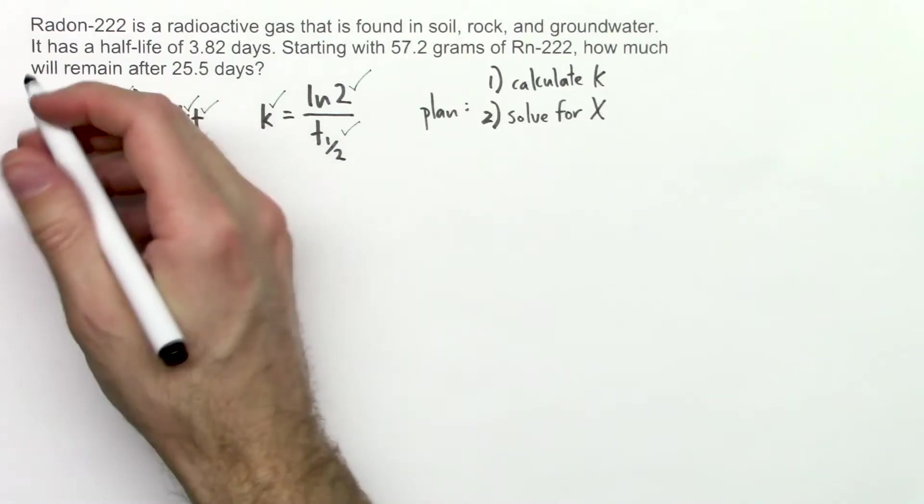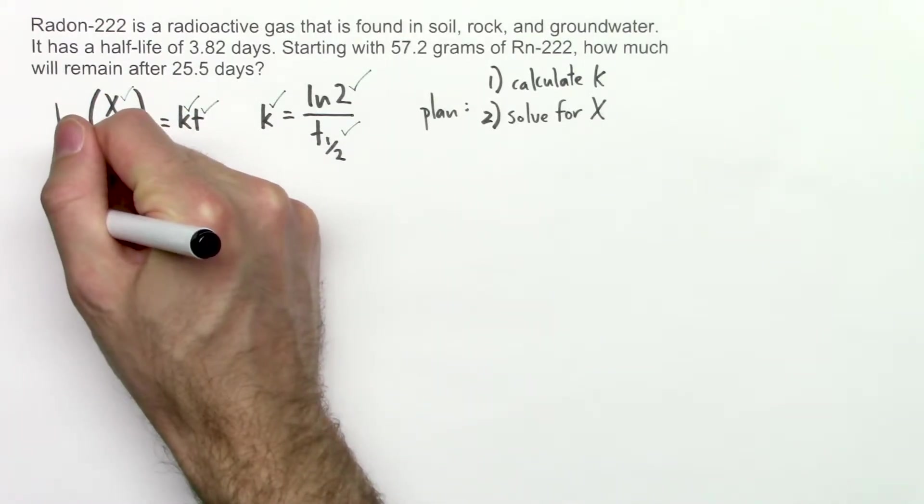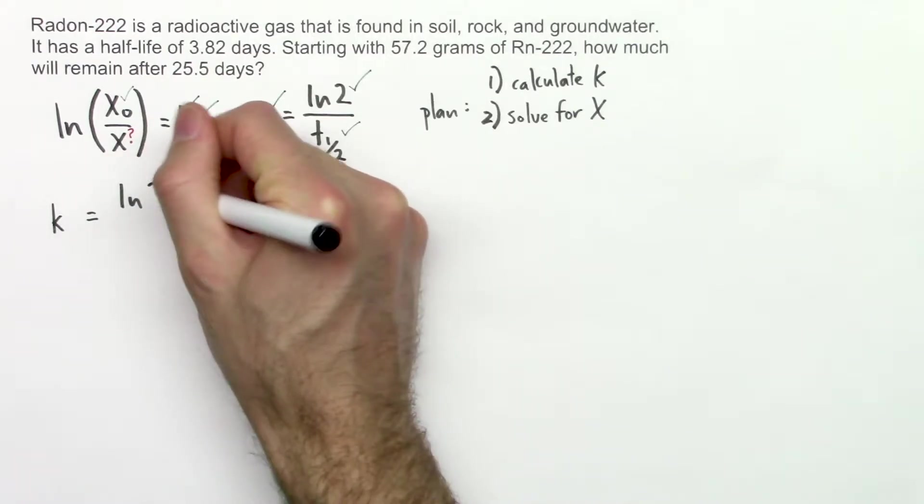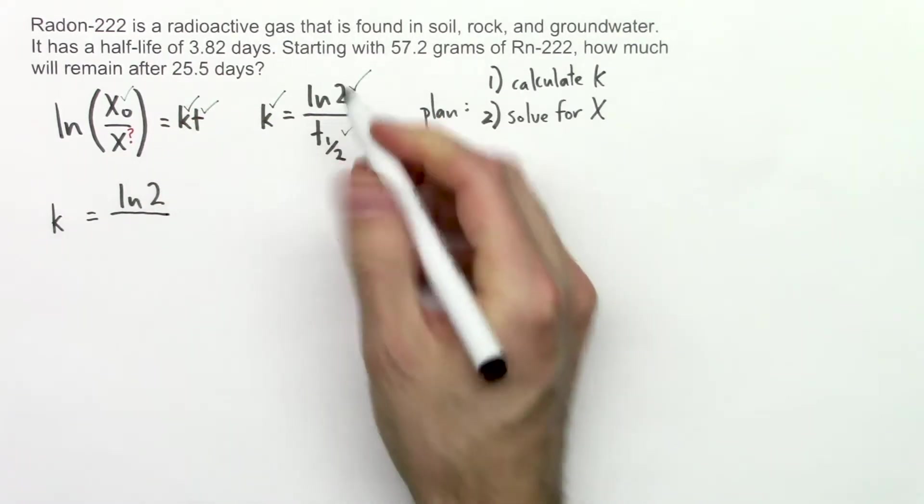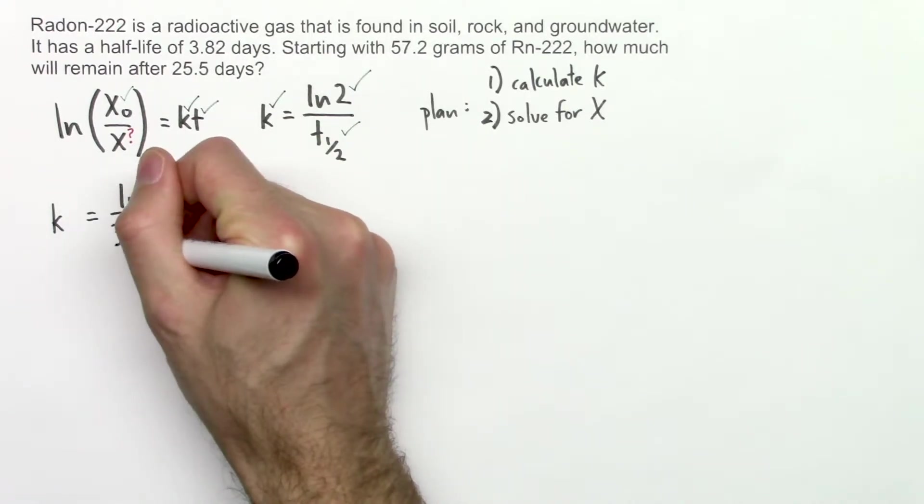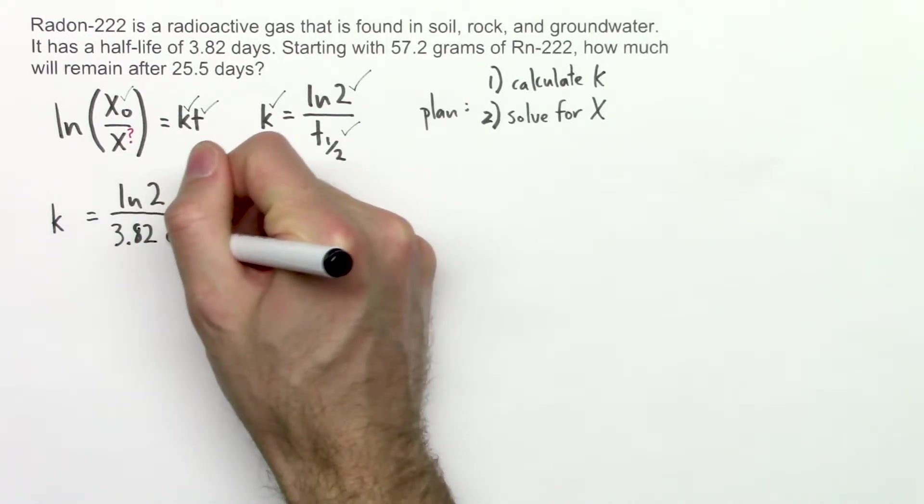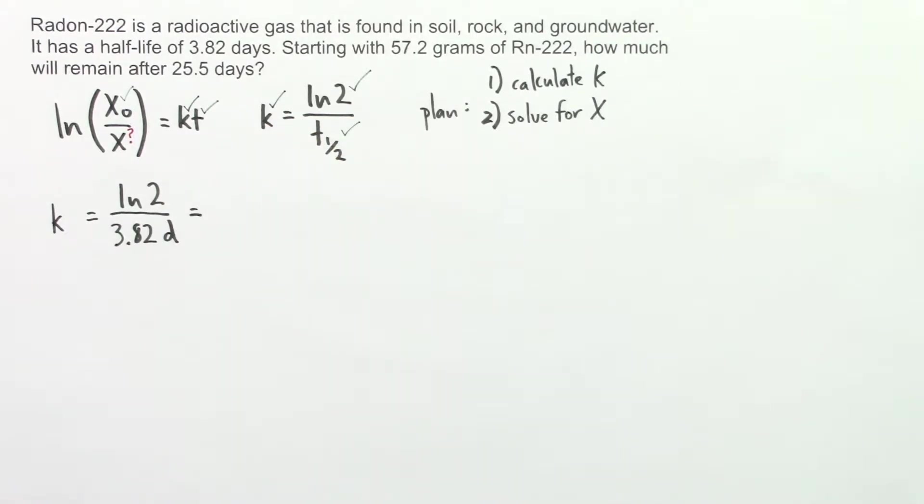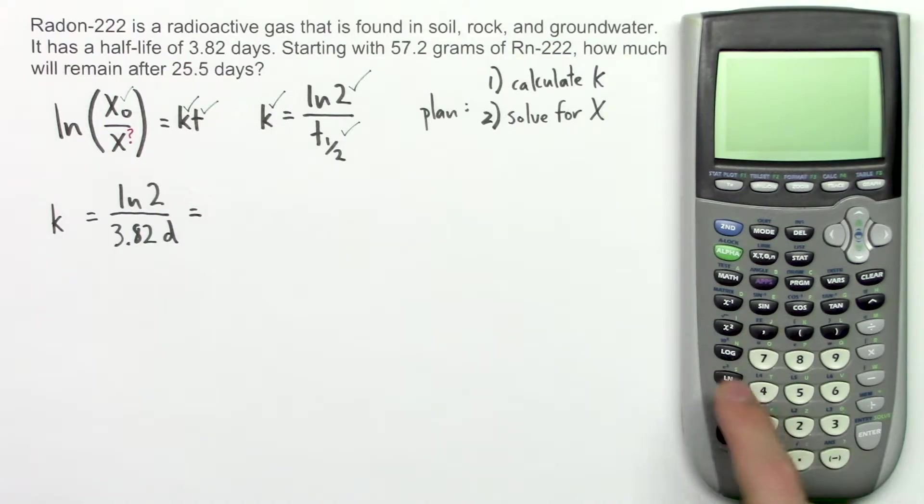Let's get started calculating k using this equation. k equals ln2 divided by the half-life, which is 3.82 days. Let's use a calculator for this. I've got the ln key right here on the calculator. So ln2, close the parentheses, divided by 3.82.